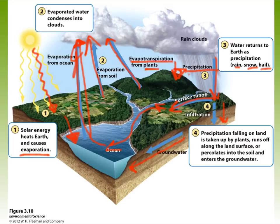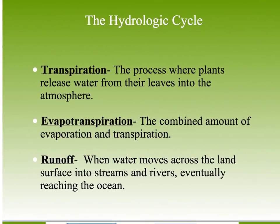Humans have changed the water cycle. Clearing land for agriculture and putting down roads and concrete increases runoff — when water hits the ground, it moves faster along the surface and can't percolate into the ground to replenish groundwater. Terms you need to know for the hydrologic cycle: transpiration, evapotranspiration, and runoff.